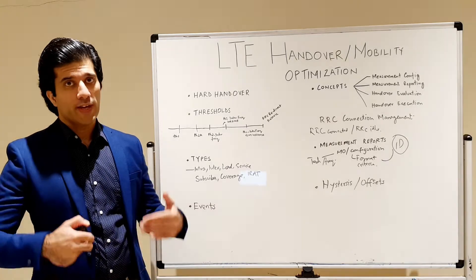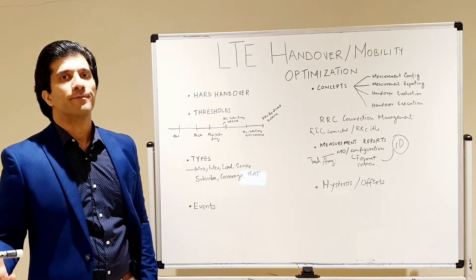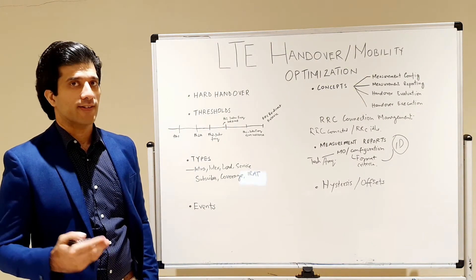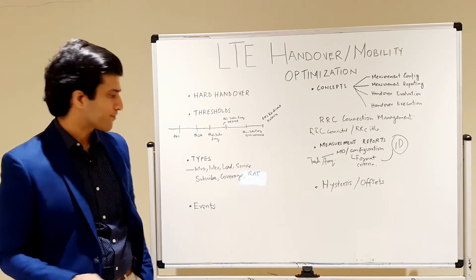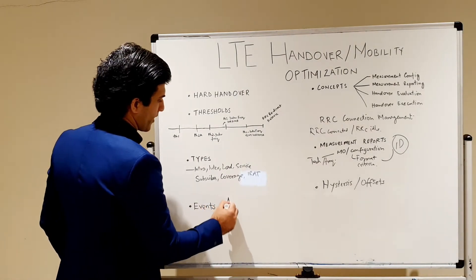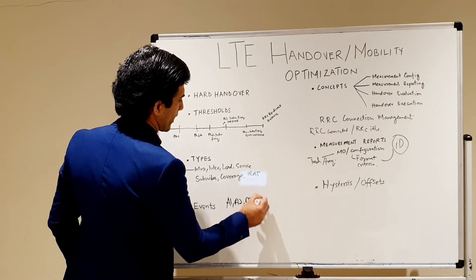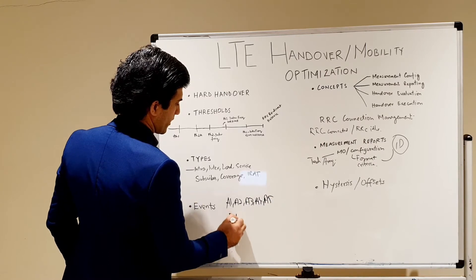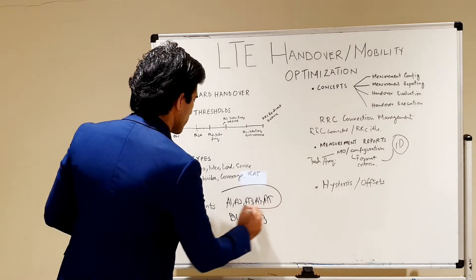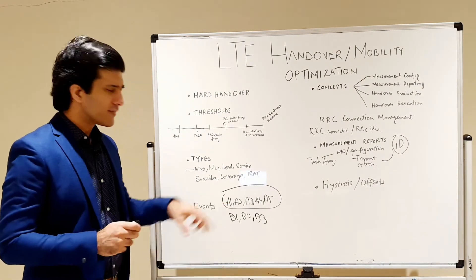In LTE there is periodic reporting, where after a certain time the mobile reports to the eNodeB about RSRP, RSRQ, and other radio network elements. Beyond periodic reporting, we have event-based reporting. The events are: A1, A2, A3, A4, A5 — which apply to both intra-frequency and inter-frequency scenarios — and B1, B2, B3, with thresholds defined accordingly.